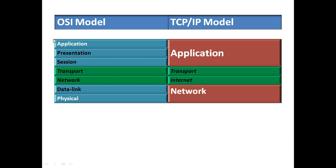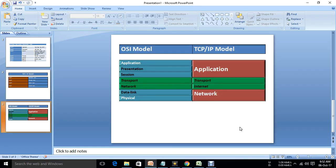So layer-wise, this is the difference. But the working process is the same. In the OSI Model there are 7 layers — 7 stages cross the process. In the TCP & IP Model this is a process of 4 stages. That's the difference between the OSI Model and TCP & IP Model. Thanks for watching, until next time.